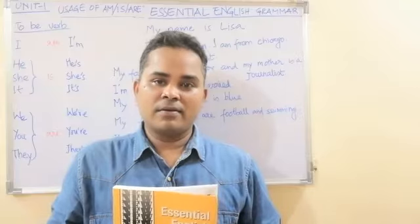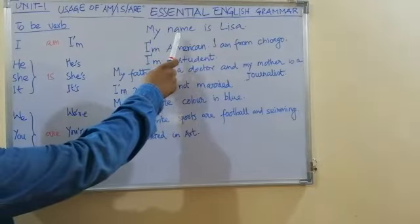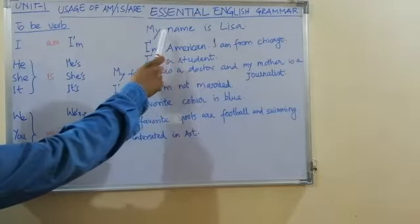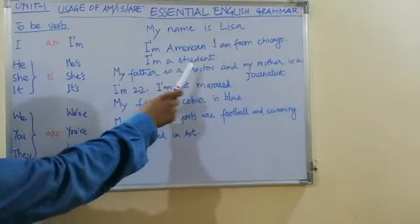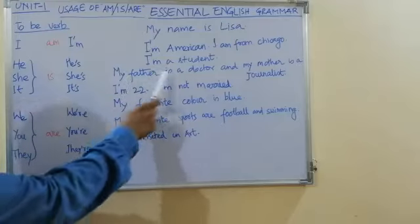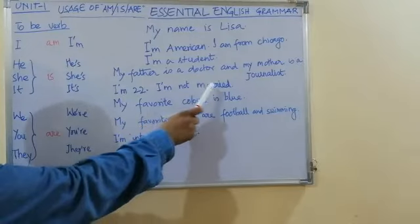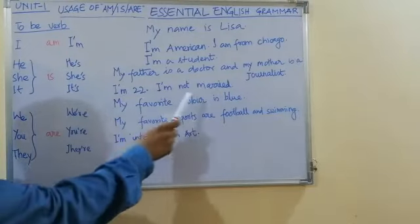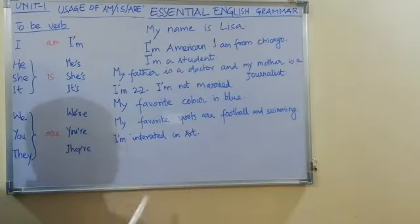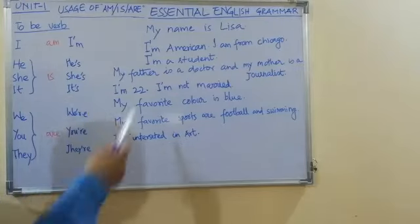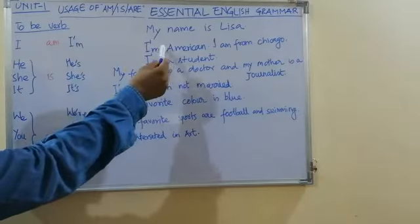Let's get started. This is the brief introduction about Lisa. My name is Lisa. I'm American. I'm from Chicago. I'm a student. My father is a doctor and my mother is a journalist. I'm 22. I'm not married. My favorite color is blue. My favorite sports are football and swimming. I am interested in art. So this was the brief introduction about Lisa, and you can see the usage of am, is, are.